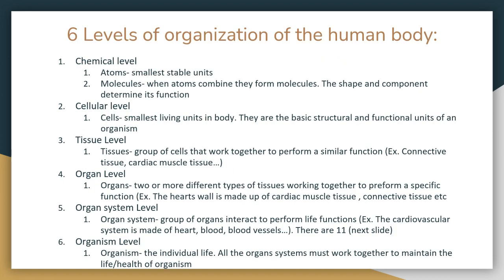We start off with the chemical level. An atom is the smallest stable unit you have to know. Molecules are formed when atoms combine, and the shape of the molecule and its components determine its function. Next is the cellular level: the cell is the smallest living unit in the body and is the basic structural and functional unit of an organism.